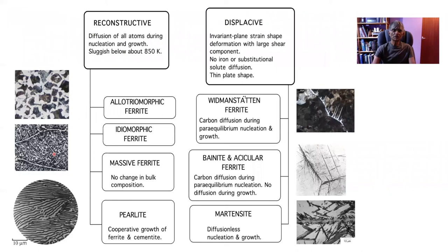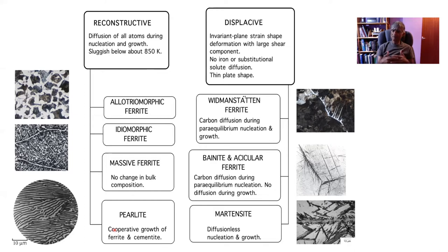Pearlite belongs to the reconstructive set of reactions and therefore will tend to occur at reasonable rates only at temperatures above around 600 degrees centigrade. It is an interesting transformation because it is the only one which leaves the composition of the austenite unchanged in an iron-carbon alloy, because it involves the cooperative growth of cementite and ferrite.